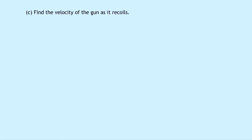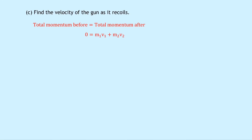Part c asks us to find the velocity of the gun as it recoils. When the gun fires the bullet, the two explode apart and the gun moves backwards to the left. We use the law of conservation of momentum: total momentum before equals total momentum after. For explosions, this gives us 0 = m1v1 + m2v2, since the total momentum before is always 0 when the object starts at rest. Substituting: 0 = 5v1 + 0.01 × 200.